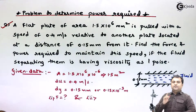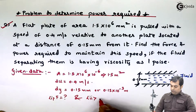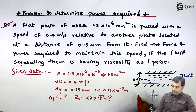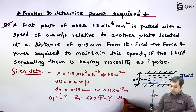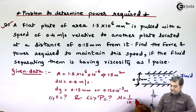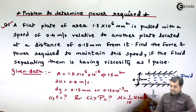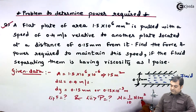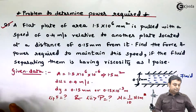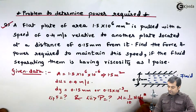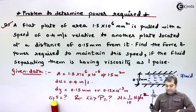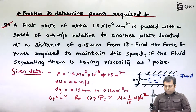Viscosity is one poise. Poise is the unit of dynamic viscosity, so μ = 1 poise. One poise equals 1/10 newton·second per meter square.